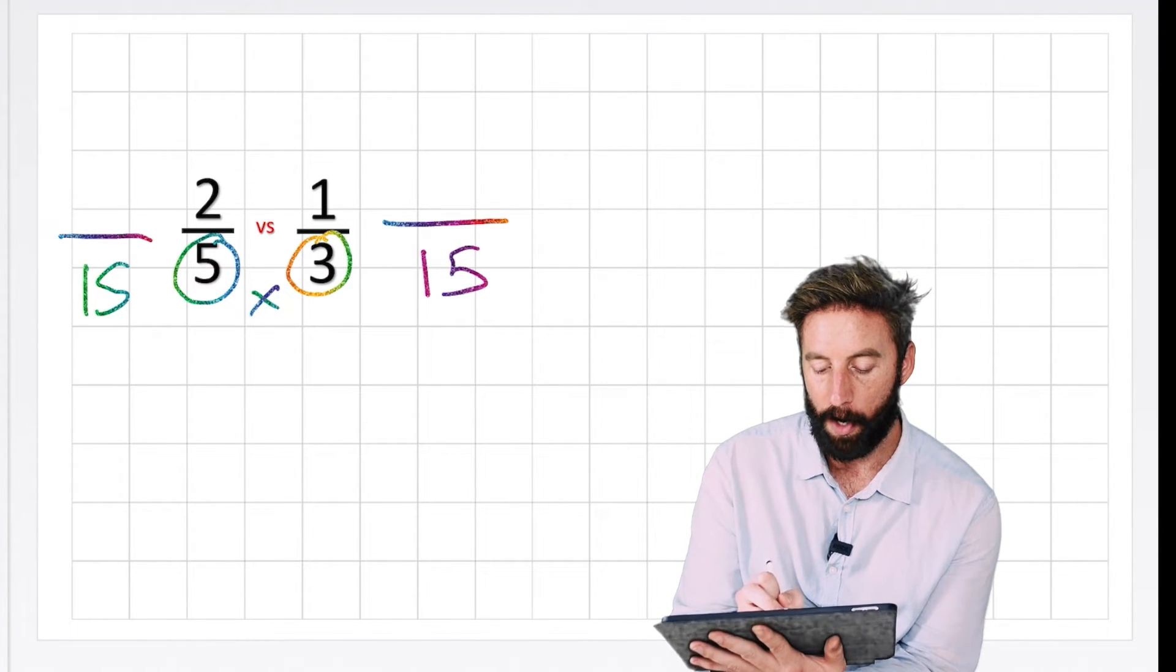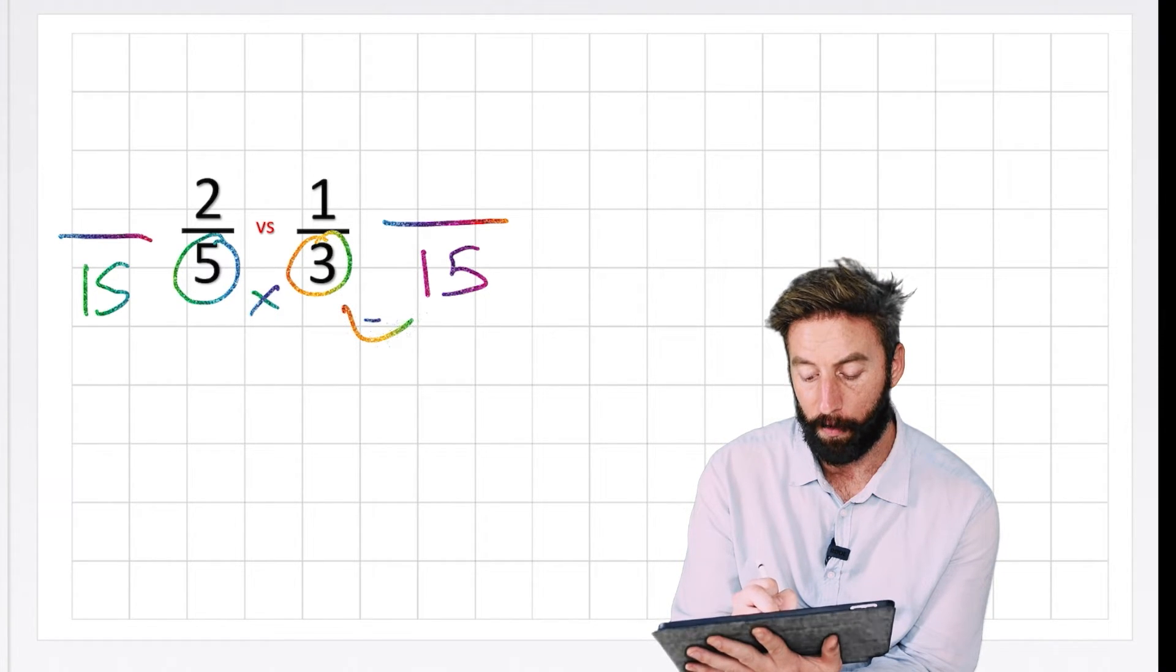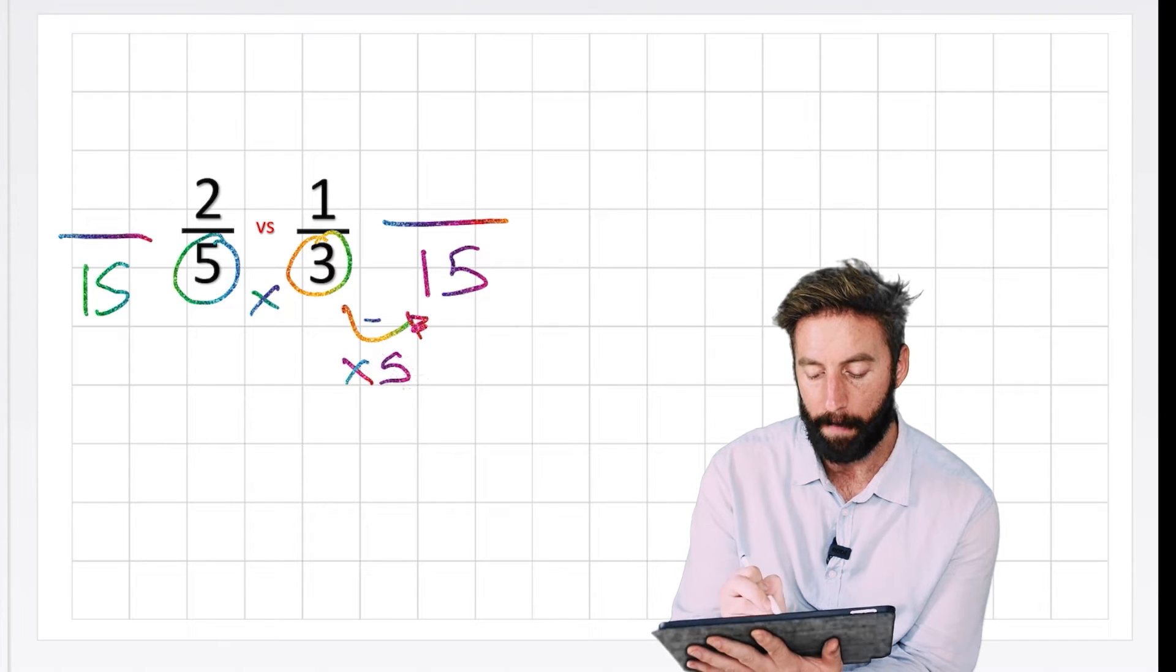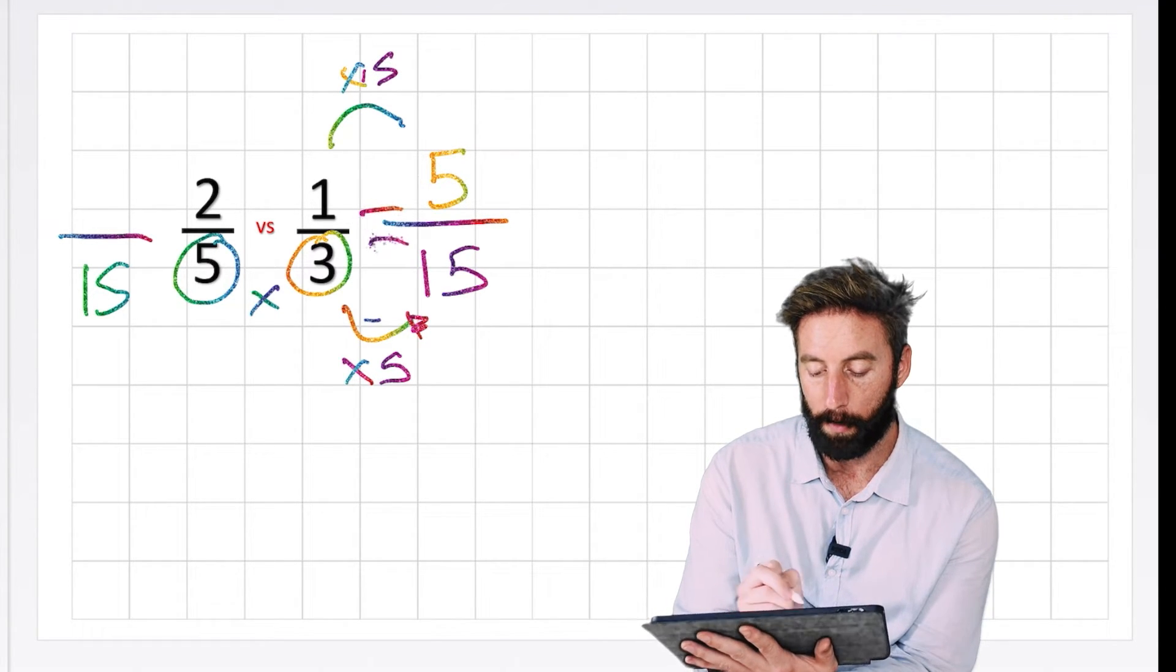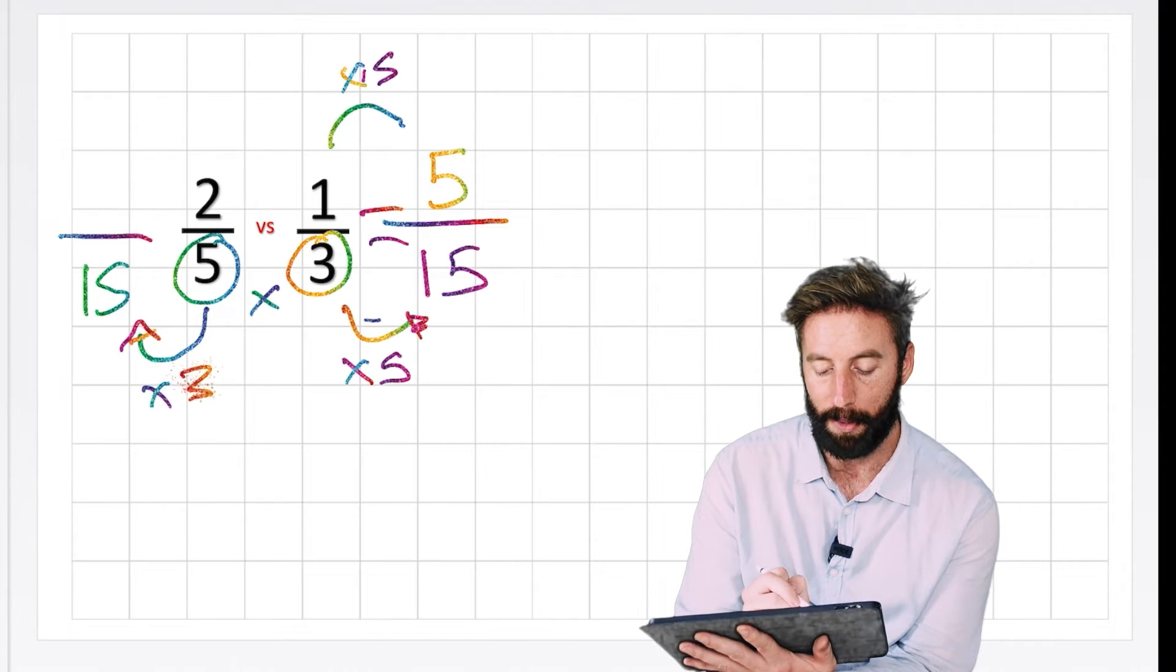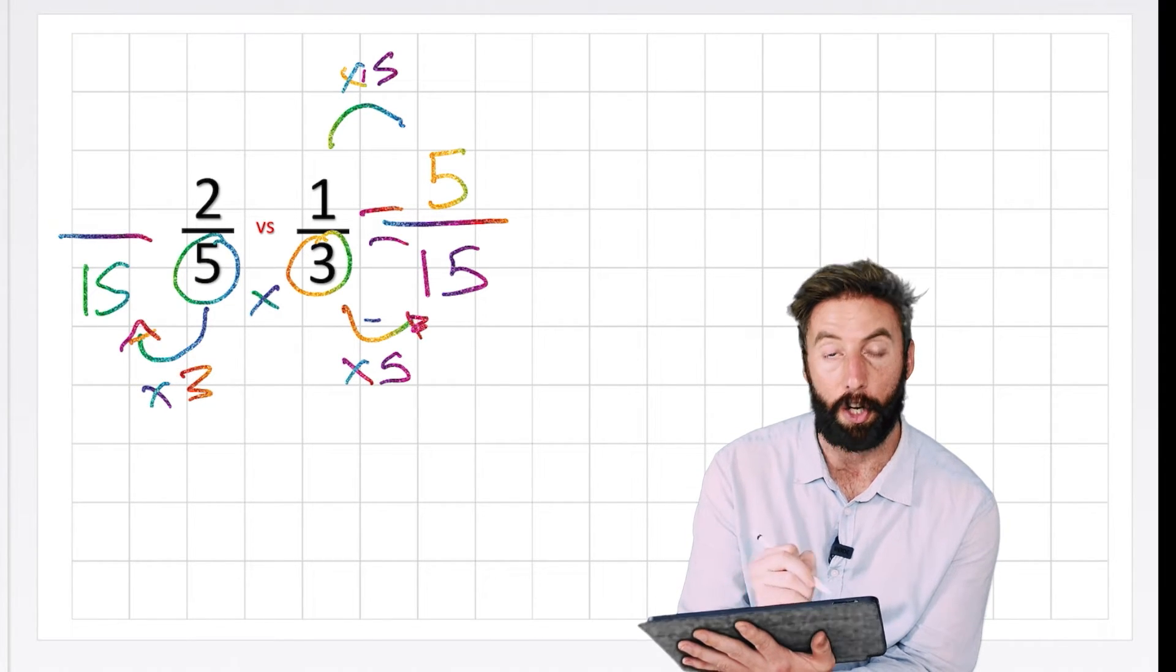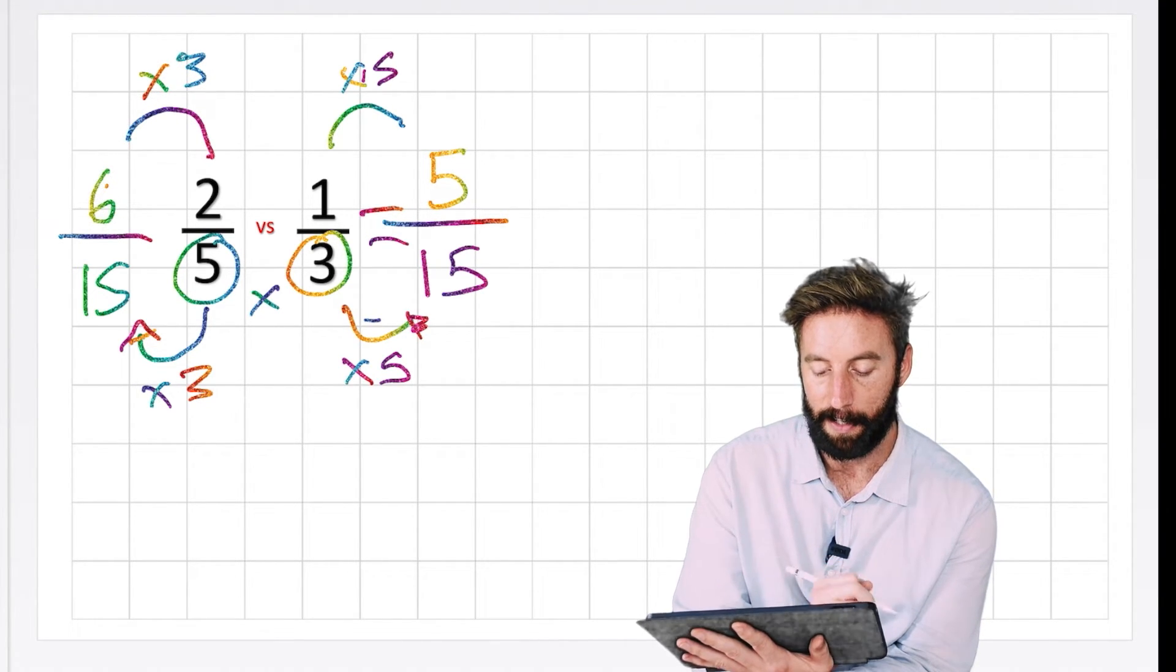So again, let's start from here then. So I know that 15s are going to be my denominators. Well, how did I get from 3 to 15? I know I multiplied it by 5. So whatever I do to the bottom, I must now do to the top. The numerator times it by 5. 1 times 5 is 5. So 1 third is equivalent to 5 fifteenths. OK, well, how did I get from 5 to 15? I multiplied by 3. Therefore, what I did to the denominator, I now need to do to the numerator. Times it by 3. 2 times 3 is 6.